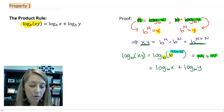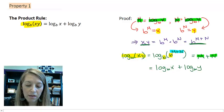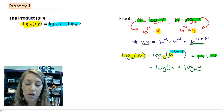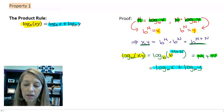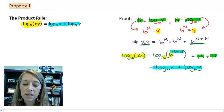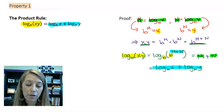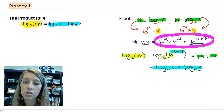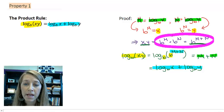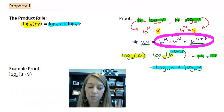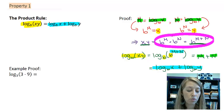So on the left, we have log base b of xy. And then on the right, we have log base b of x plus log base b of y. And so basically what our proof boils down to is a lot of substituting things back and forth, but it also boils down to our exponential property. And that makes sense because logarithms are inverses of exponents.